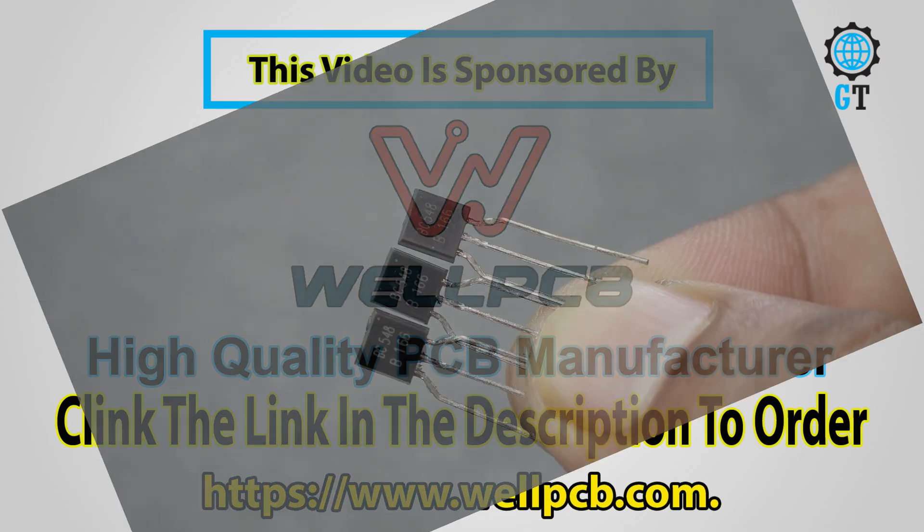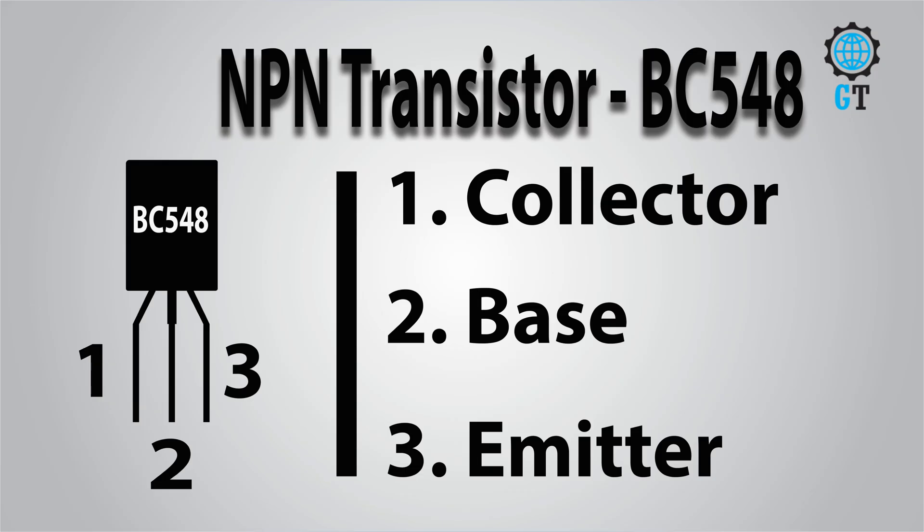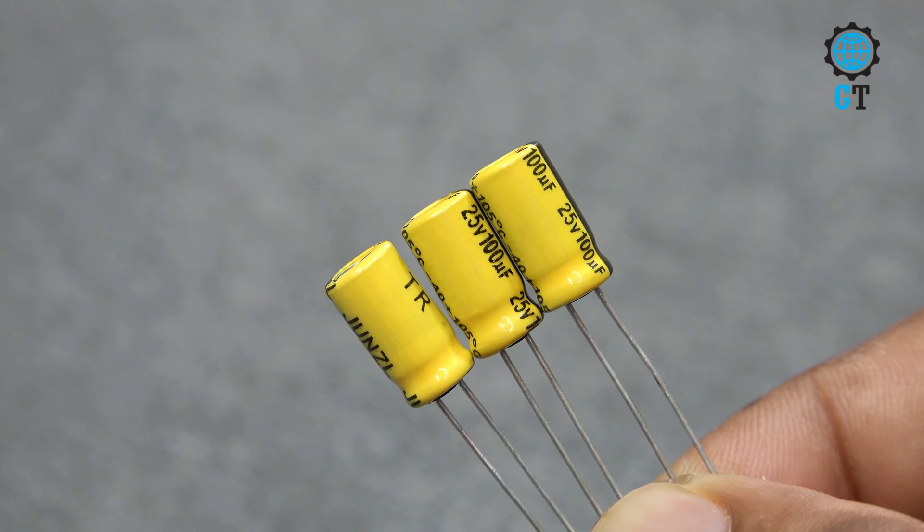With this LED flasher circuit, first we need 3 transistors. Its value is VC548. Here is the pinout of this transistor. Then we need 3 capacitors, its value 100 microfarad 25 volt.